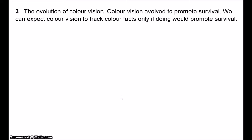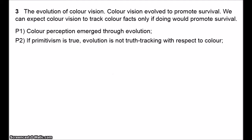So we can expect colour vision to detect the facts, we can expect colour vision to show us how things actually are, only if there is a benefit in doing so. And the argument against primitivism is that if colours are these non-physical, irreducible properties, then there's no benefit in tracking facts about colour.